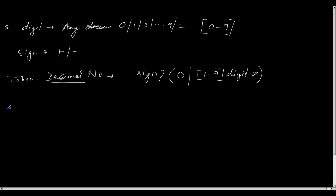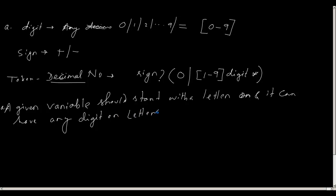Now, suppose I define that a given variable should start with a letter and it can have any digit or letter in between. Then, how will I represent a variable? How will I create a regular expression for the token variable or identifier? So I can say that first let us start with a letter. What can be a letter? So my letter is it can be a to z or capital A to capital Z.